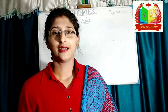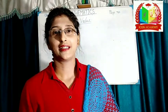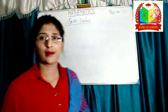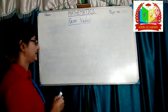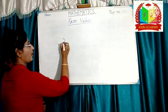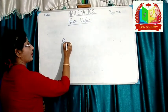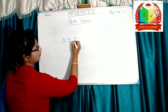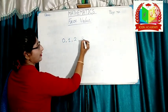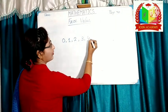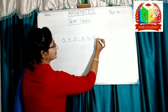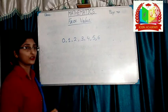Phase value of a digit is the digit itself. It never changes. Take any number: 0, 1, 2, 3, 4, 5, 6 and so on.